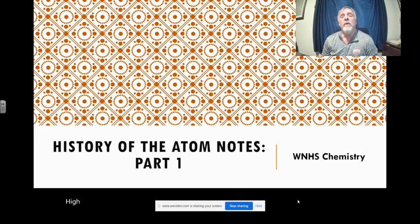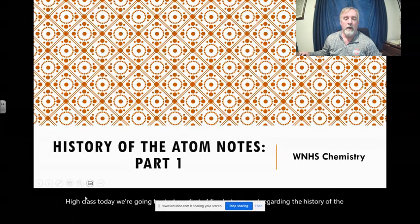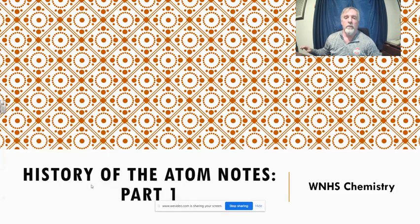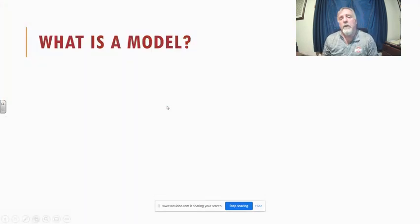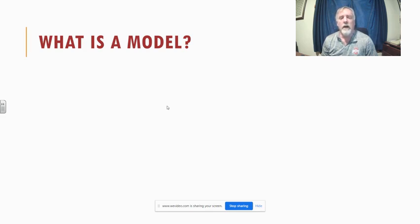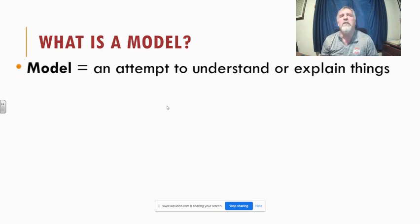Hi class, today we're going to start our first of five lectures regarding the history of the atom, or more accurately, our history of understanding the atom. First thing we got to do, if we're thinking about an atom, we have to talk about a model. I'm not talking about a model you'd see in a magazine or on TV — a model is something to help us understand or explain something.